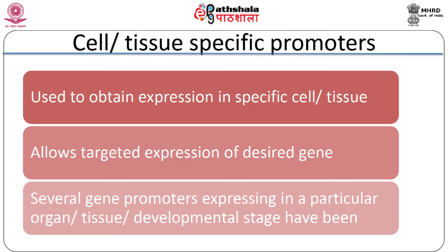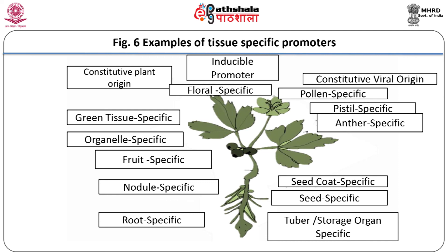Constitutive promoters are not useful in obtaining expression in specific tissues, and constitutive expression can interfere with normal plant functioning. Hence, there is a need for tissue- or organ-specific expression, which tissue-specific promoters fulfill. A number of plant organ, tissue, or developmental stage-specific promoters have been characterized. Ethylene is a major hormone involved in fruit ripening; promoters of ACC oxidase, E4, E8, and polygalacturonase genes have been well studied in tomato and apple and have commercial applications in manipulating fruit ripening. Strawberry FaXyl1 promoter, banana sucrose phosphate synthase (SPS) promoter, and Citrus C11 promoter are examples of fruit-specific promoters.